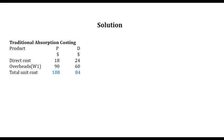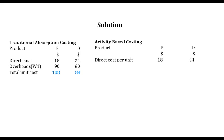We now proceed with the activity-based costing system. We have the same products P and Q in dollars, with direct cost per unit of $18 and $24. We now have to compute overheads for each product. Overheads are divided into several activities. The first activity is setup. The cost driver here is number of setups, and the setup cost is $7,000.